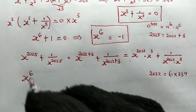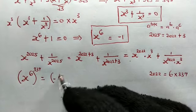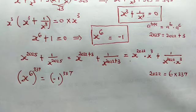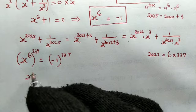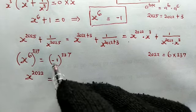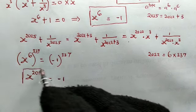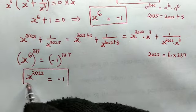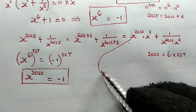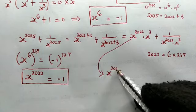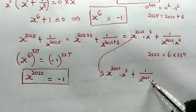Since x⁶ = -1, let's raise both sides to the power of 337 so we can solve for x^2022. Multiplying the powers together, we get x^2022 = (-1)^337. Since -1 raised to an odd power gives -1, we get x^2022 = -1. So the expression x^2022 × x³ + 1/(x^2022 × x³) becomes -1 × x³ + 1/(-1 × x³).